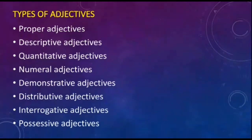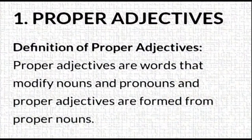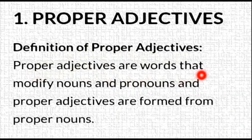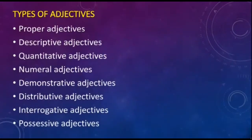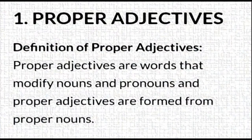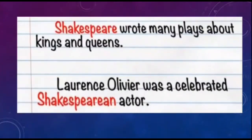Let's learn in detail about these adjectives. A proper adjective is a word that modifies a noun or pronoun and is formed from a proper noun. For example, 'Shakespeare wrote many plays about kings and queens' — here Shakespeare is a proper noun.